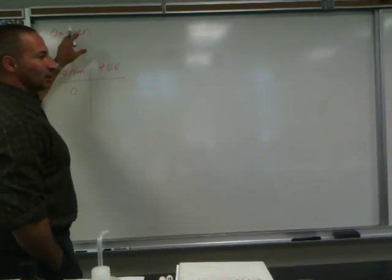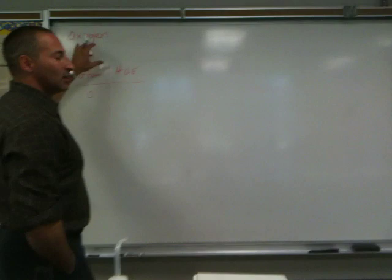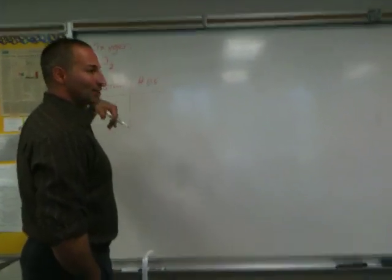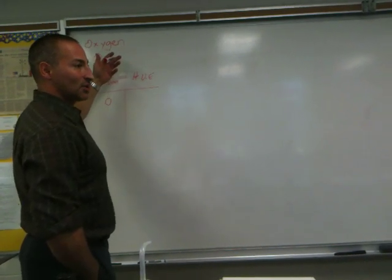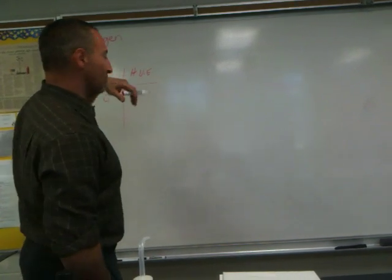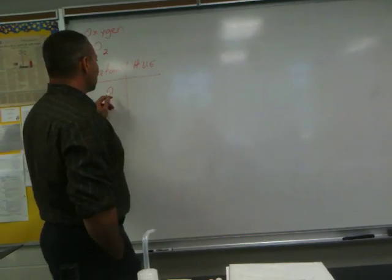If you have a formal charge, like you do on a polyatomic ion, if it's a plus charge, you subtract electrons. If it's a negative charge, you add the same number of electrons as the charge. You'll see that later when we do phosphate.